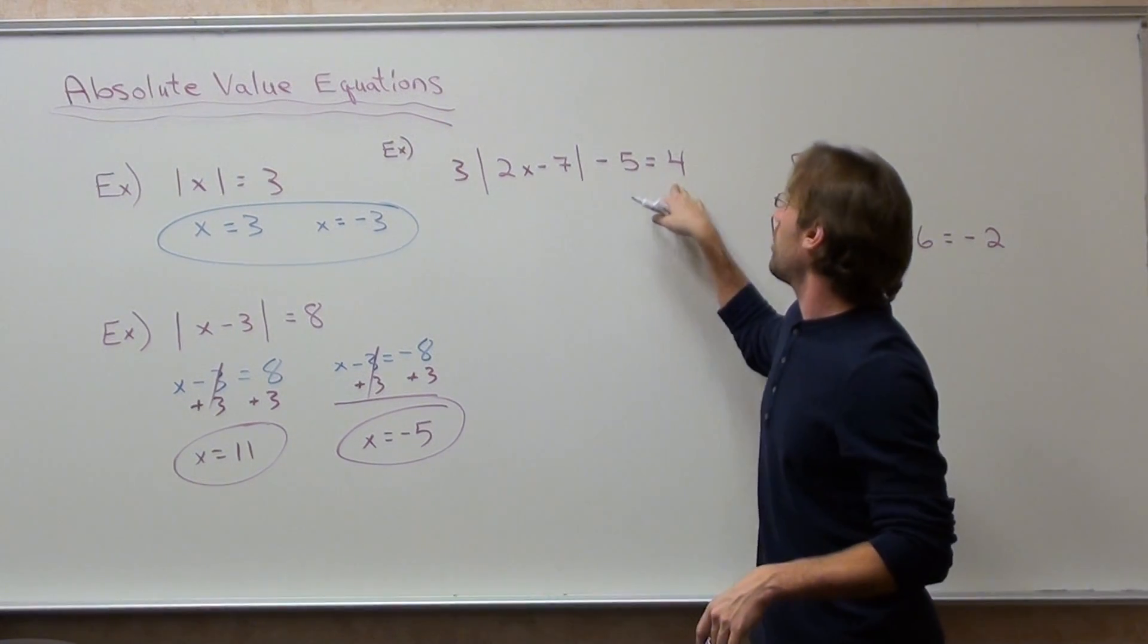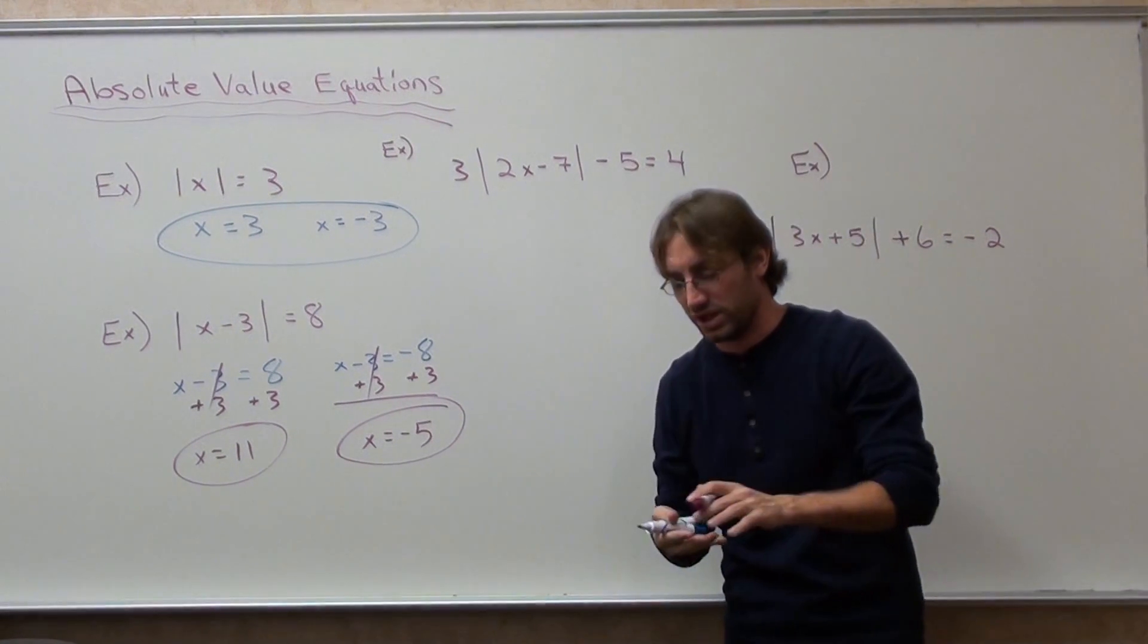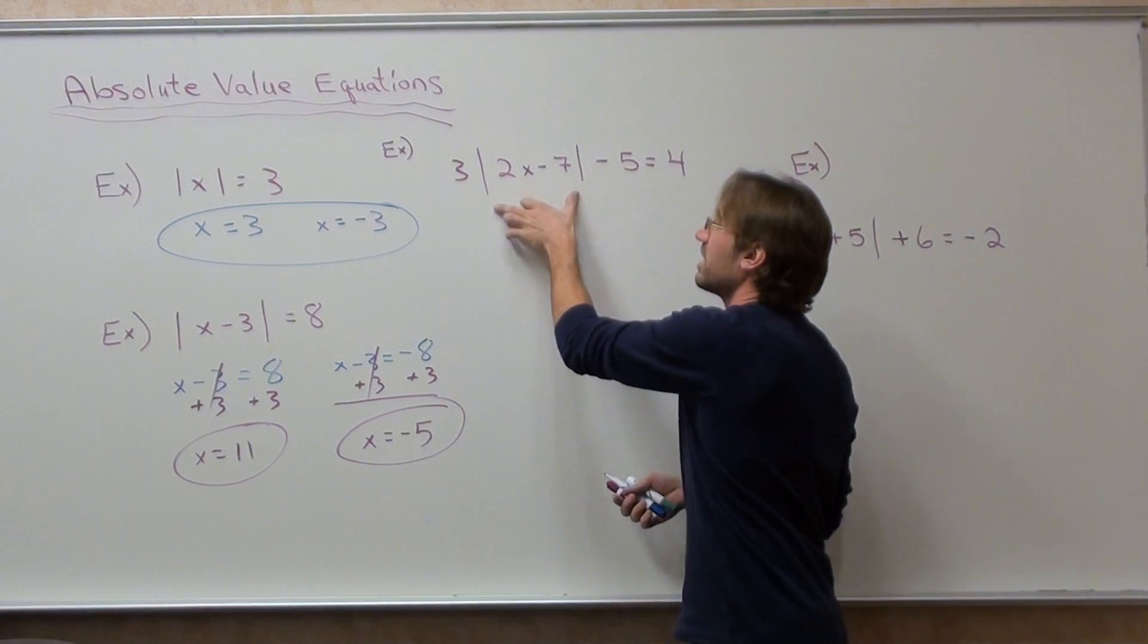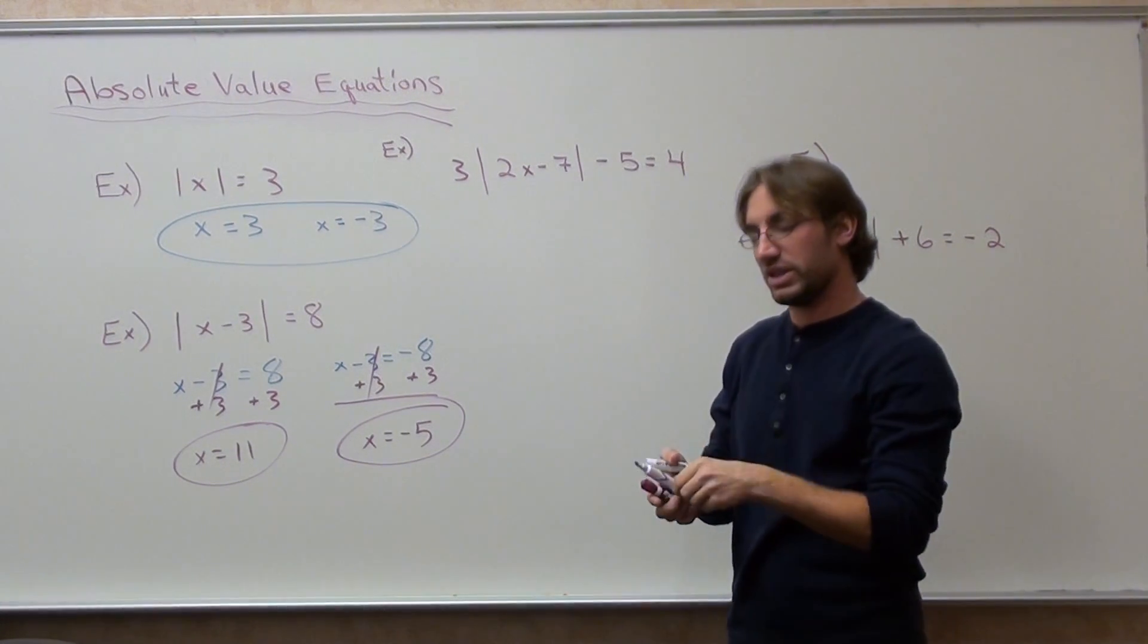You can't just say it's equal to four and negative four. That doesn't work. What you have to do is get everything in the absolute value by itself first, and I'll show you.